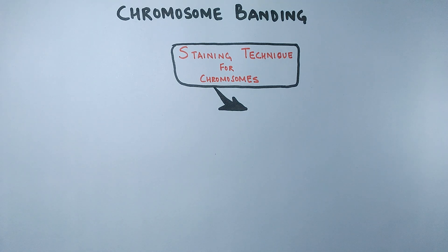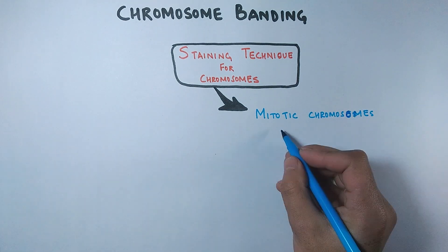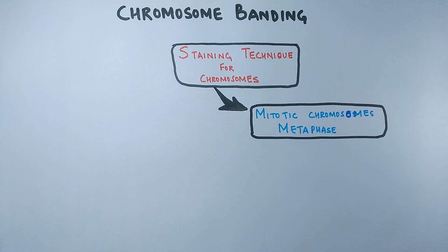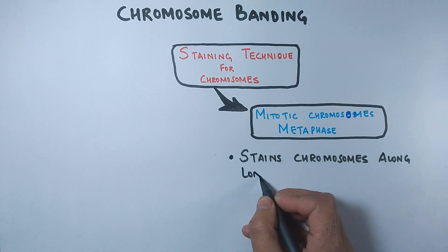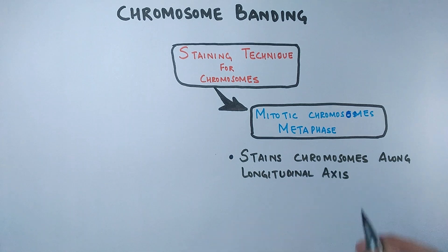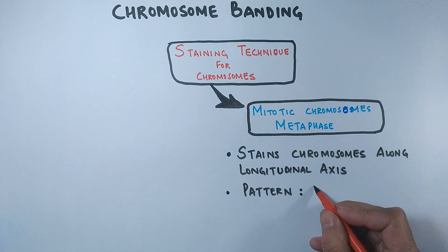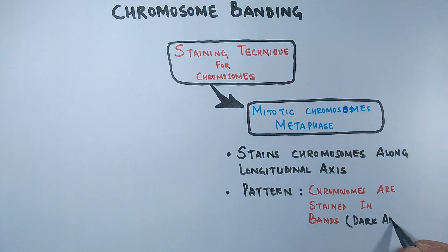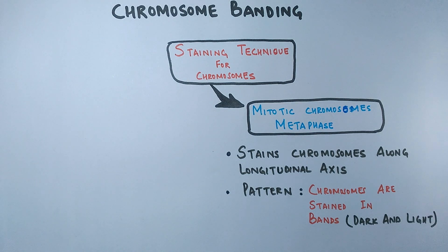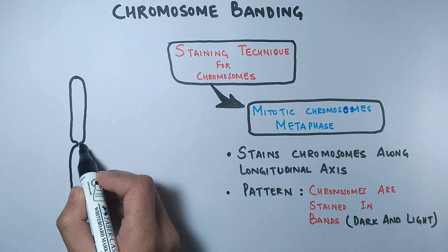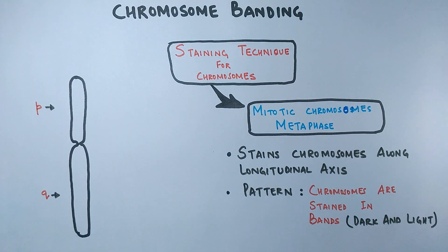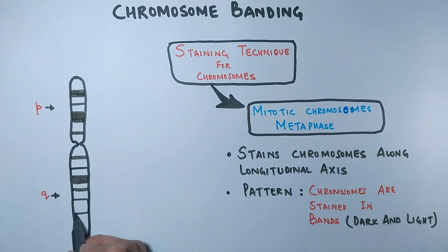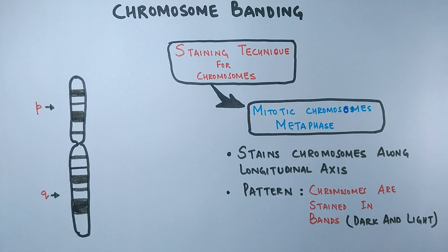The chromosomes at the metaphase stage of mitosis are stained by a chromosome banding technique. The technique stains chromosomes along their longitudinal axes, and the pattern of staining produces dark and light bands. The chromosome has a p arm and q arm, and in this way the dark and light bands are formed by chromosome banding, as shown in the figure.